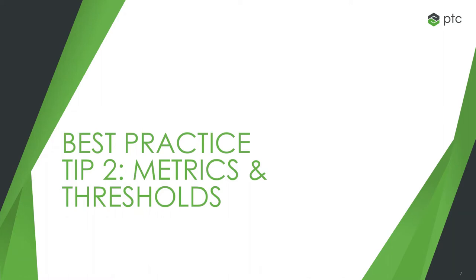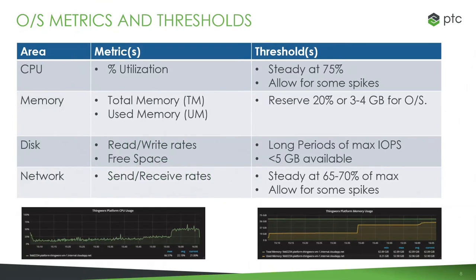Moving on to tip number two, we review the metrics you want to collect and monitor and discuss some of the thresholds you may want to be alerted to. Here are the operating system metrics to collect for any server in the infrastructure, whether it's the ThingWorx platform, connection servers, or databases. For CPU, we monitor percent utilization of all CPU cores. We recommend keeping consistent utilization under 75% of total, which leaves room for occurrences of spikes in use.